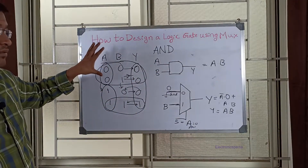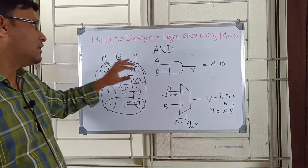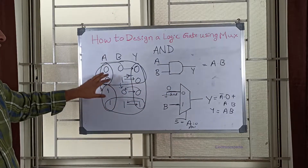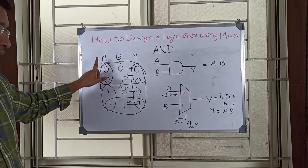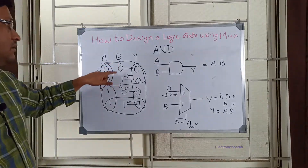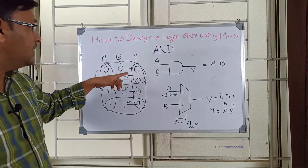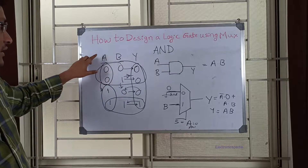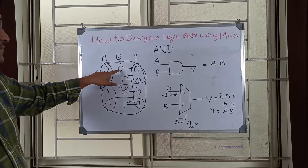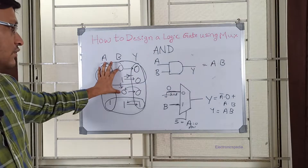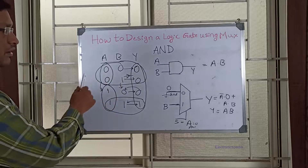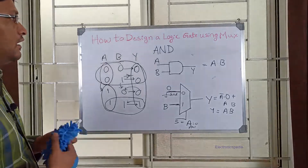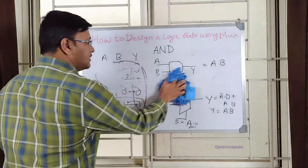The trick to draw a logic gate using a MUX is that you should know the truth table and choose the select line wisely. You can also choose B as the select line, but then you need to be cautious about how the output changes with respect to A, grouping the rows accordingly. Now let's see the next one — we will take the OR gate.